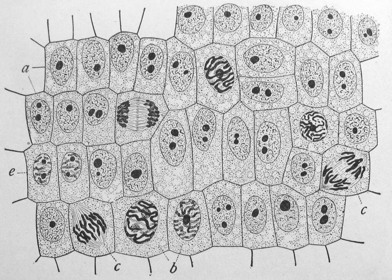Mitosis varies between organisms. For example, animal cells undergo an open mitosis, where the nuclear envelope breaks down before the chromosomes separate, whereas fungi undergo a closed mitosis, where chromosomes divide within an intact cell nucleus. Most animal cells undergo a shape change, known as mitotic cell rounding, to adopt a near-spherical morphology at the start of mitosis. Most human cells are produced by mitotic cell division. Important exceptions include the gametes—sperm and egg cells—which are produced by meiosis.